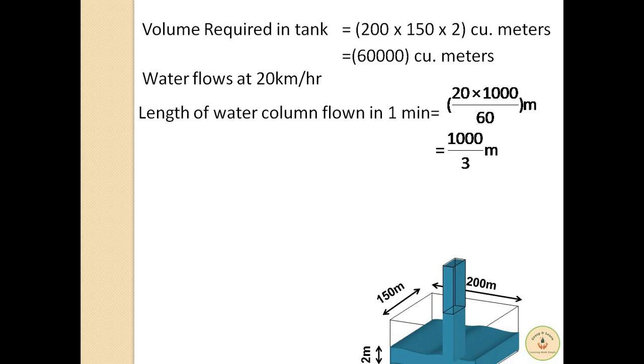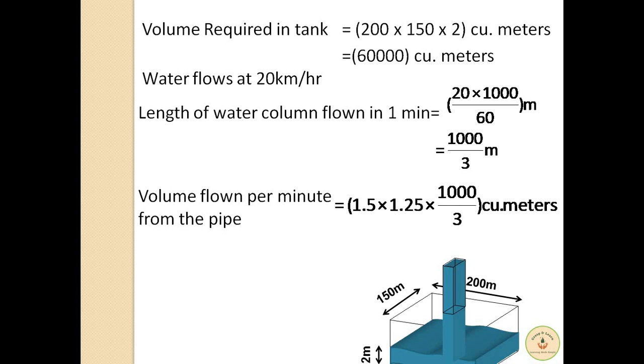Now with this speed how much volume flows through the pipe in 1 minute? This can again be solved using volume of the cuboid formula where height will be water flown of the pipe in 1 minute which is 1000/3 meters. So when all the dimensions are multiplied, i.e. length x breadth x height, we obtain 1.5 x 1.25 x 1000/3, i.e. 625 cubic meters.